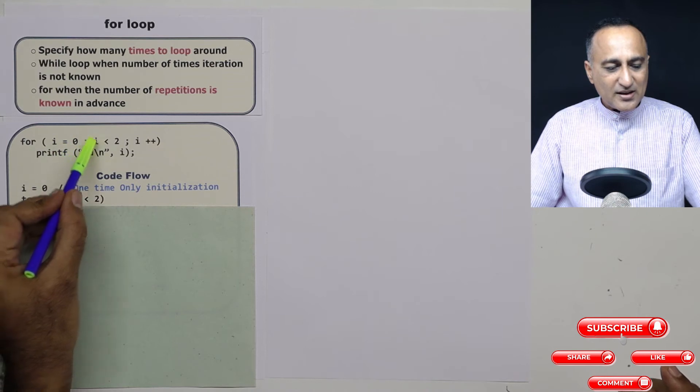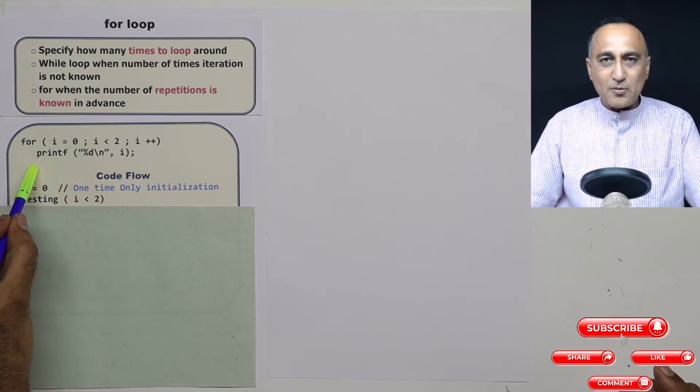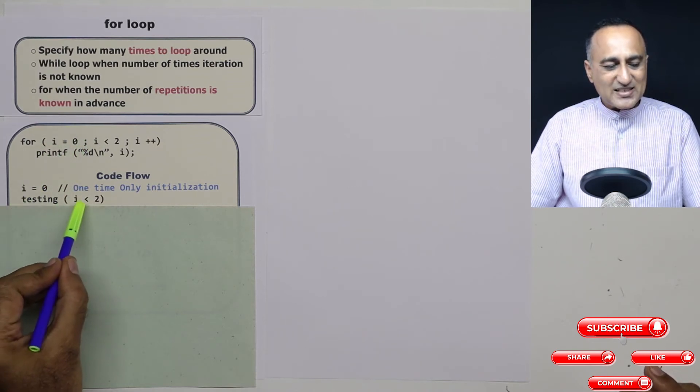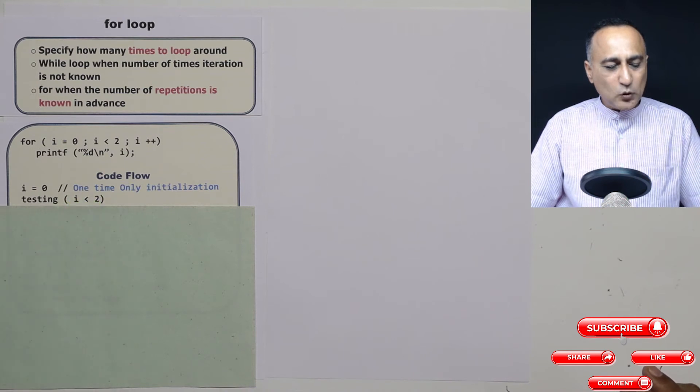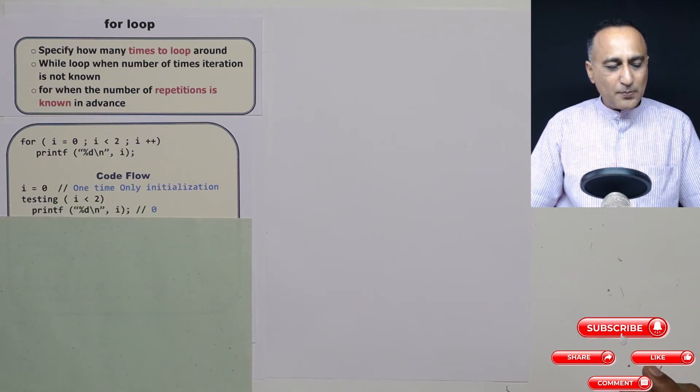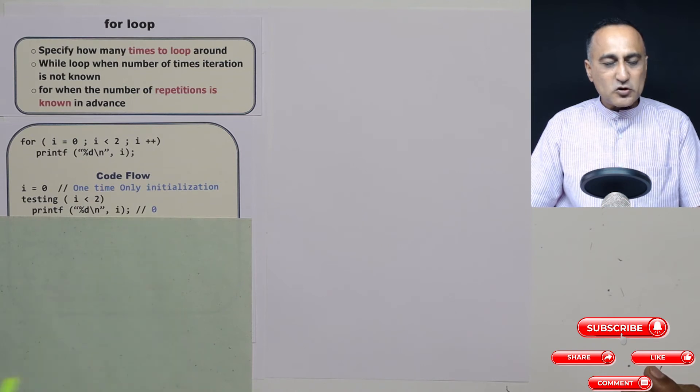Suppose i was two here, nothing would have ever been printed and would have come out of the for loop. It will test i is less than two. Since zero is less than two, it will print the value of i which happens to be zero.